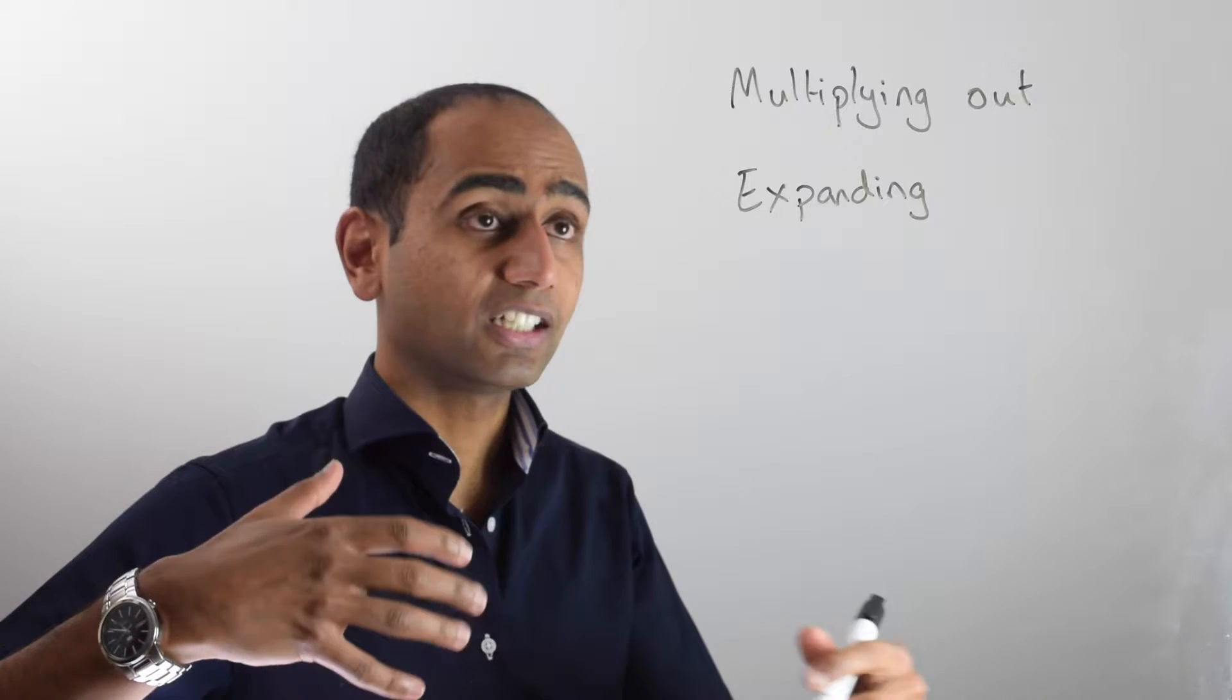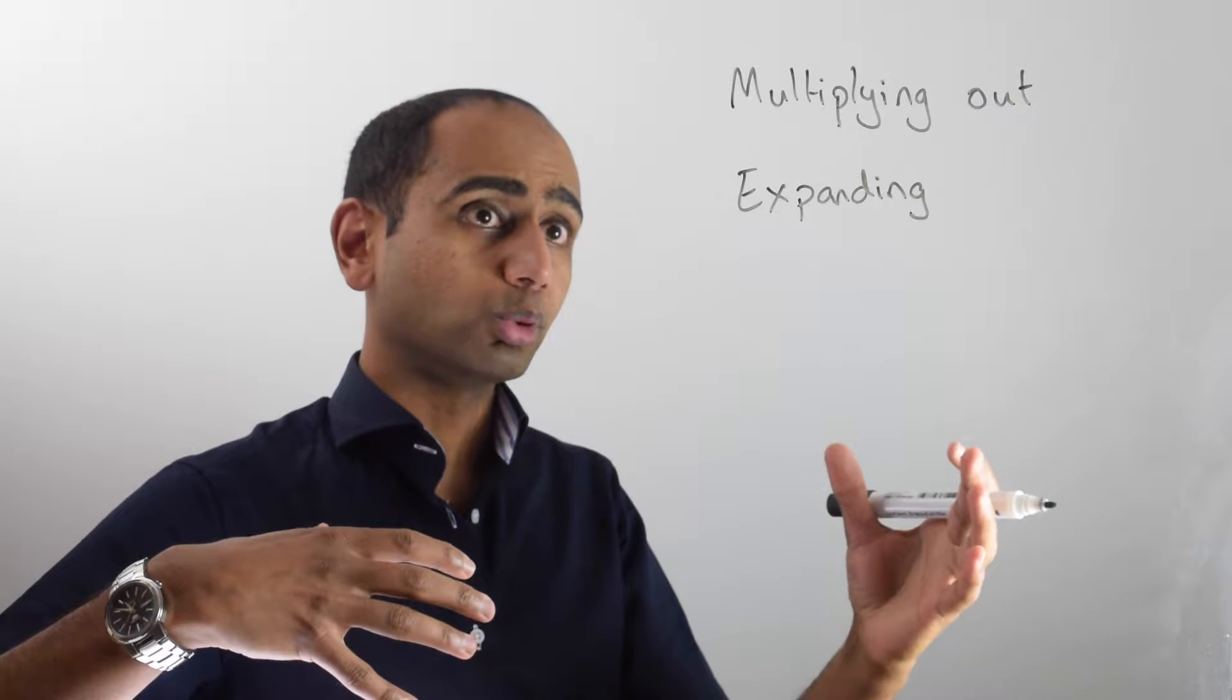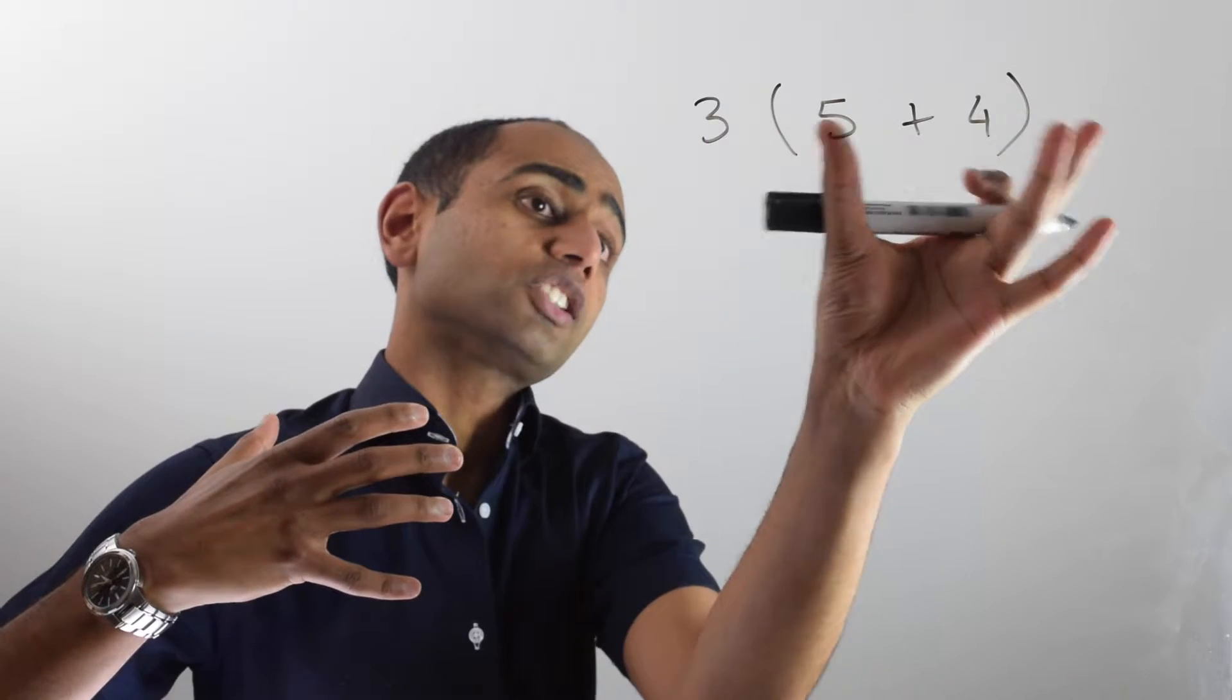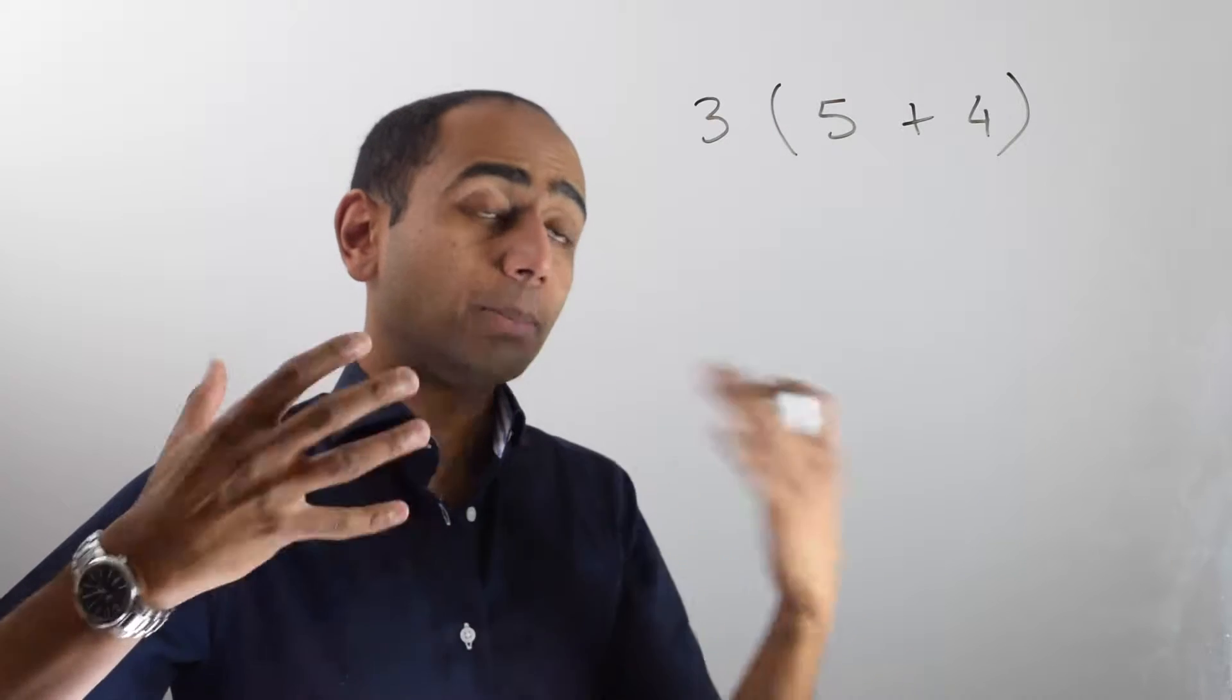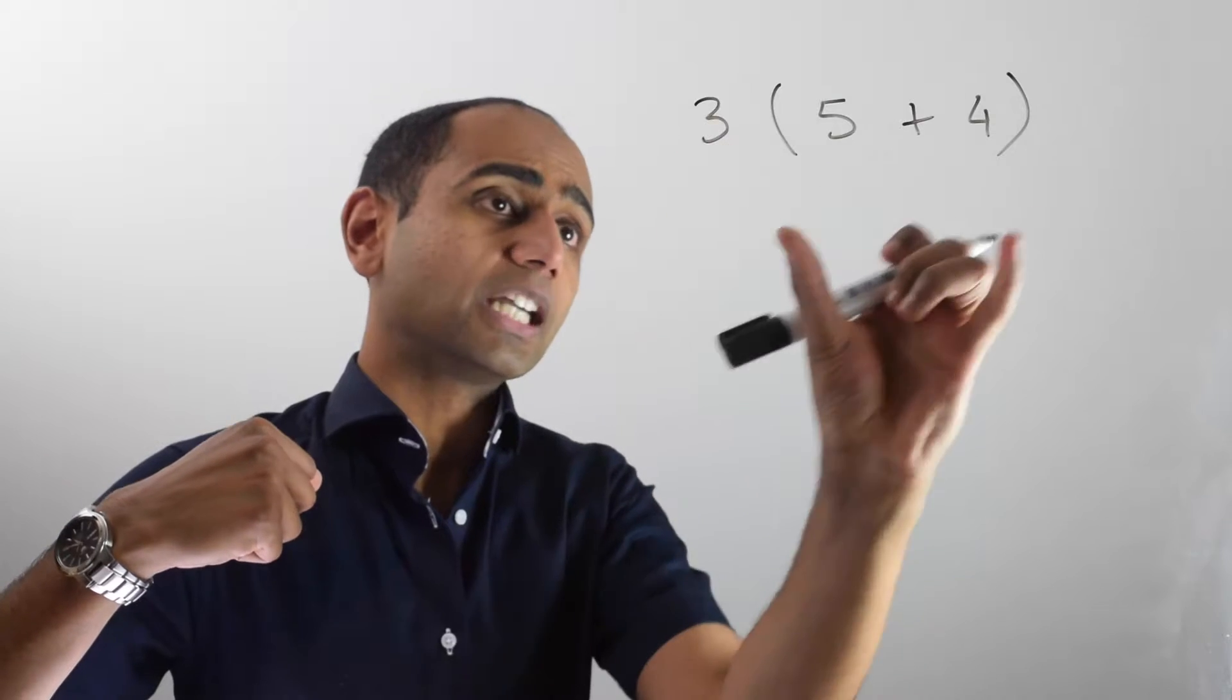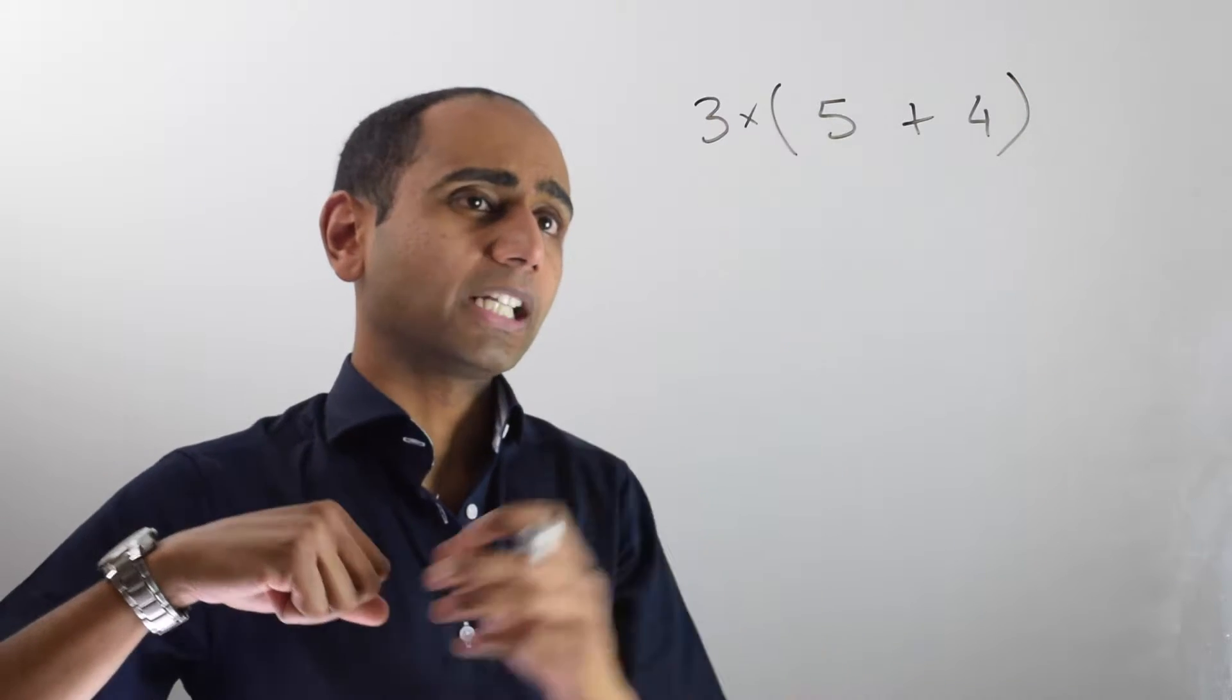Before we have a look at the examples involving algebra, I just want you to consider these examples involving numbers. So I've got here 3(5 + 4). Now what we've got here is a hidden multiplication sign. Remember in algebra we can leave out the multiplication sign. So this is actually 3 times (5 + 4). I can put that in there just to make life easier for now.